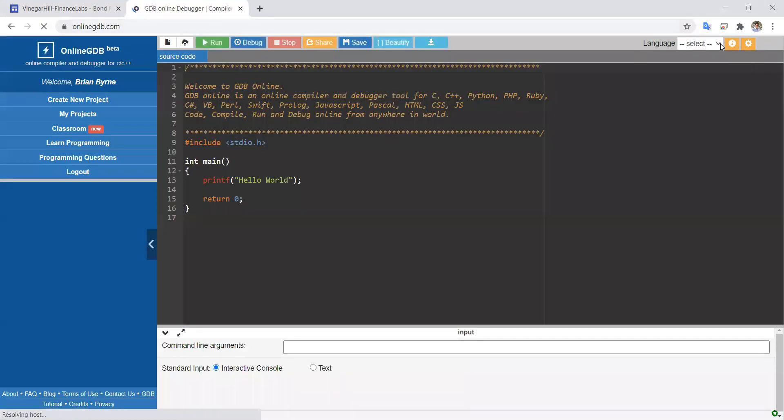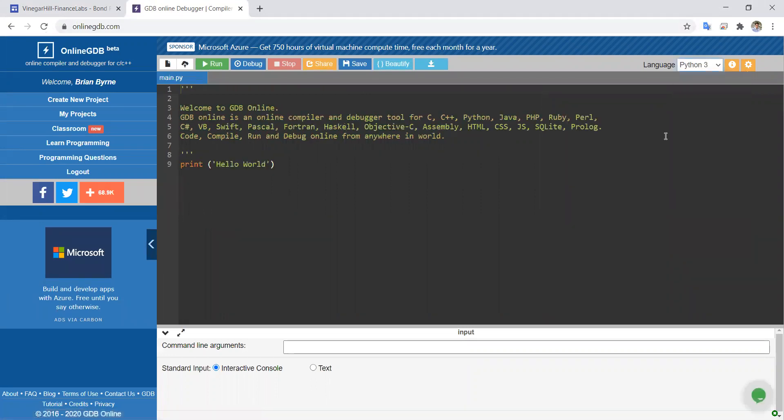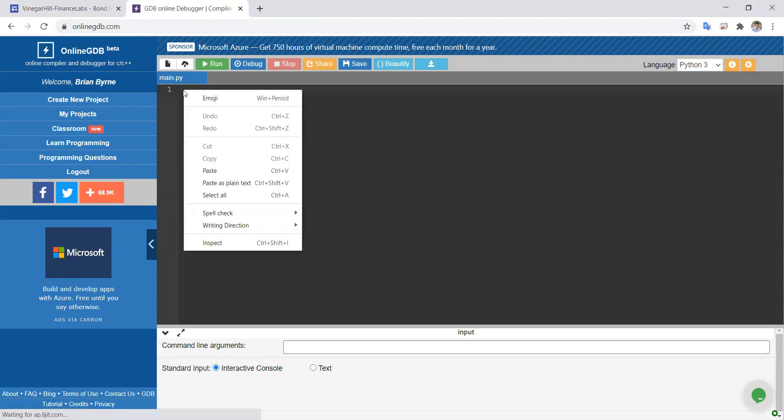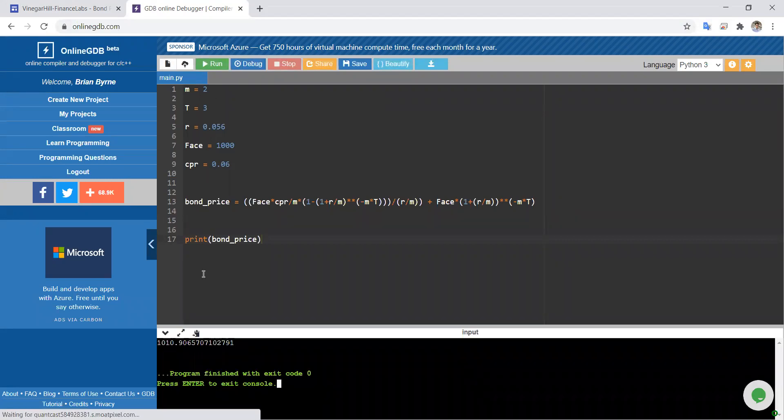Let's set that up in Python. We'll go into the online compiler - that takes a second. We select the language Python 3, clear out the code that's there, and paste in fresh with the same code as before.